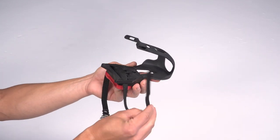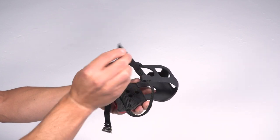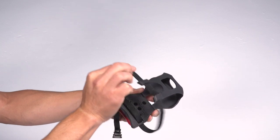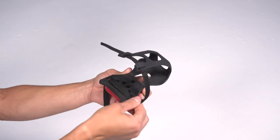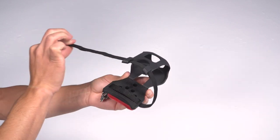Fold the strap over and thread it through the top of the clip. Pull it all the way through so the buckle sits near the bottom of the clip.